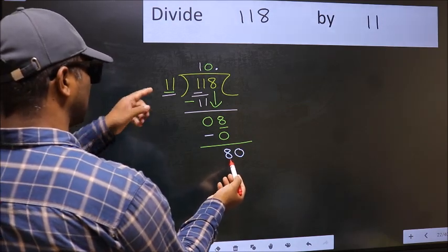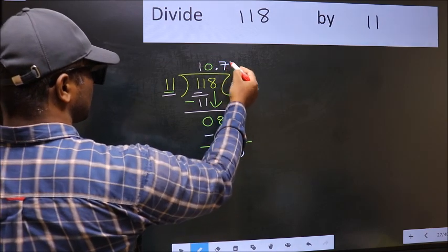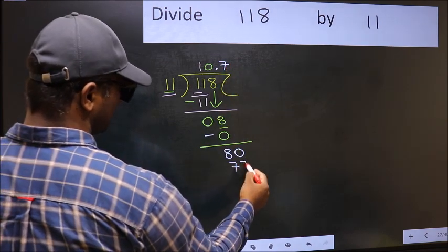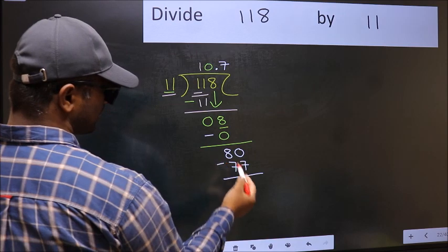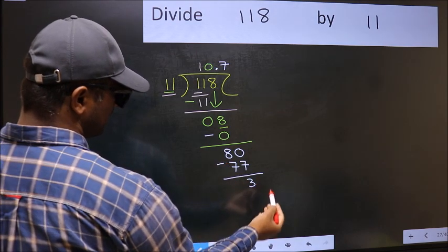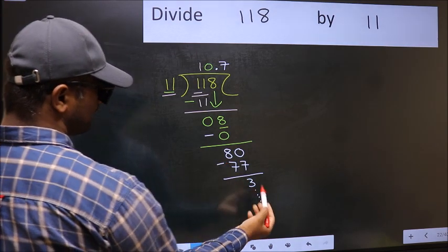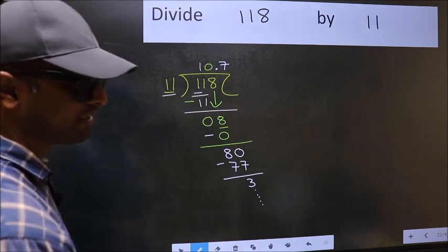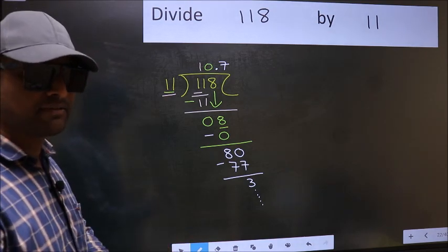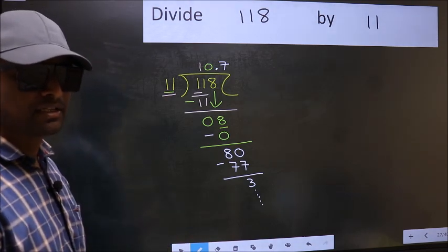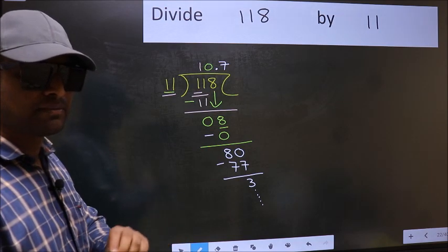Now you should subtract. We get 3. Continue the division—I am not doing that. Did you understand where the mistake happens? You should not do that mistake.